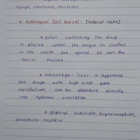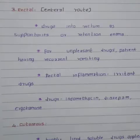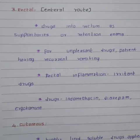The rectal route is also an enteral route. Drugs are given into the rectum as suppositories or a retention enema. It is usually used for unpleasant drugs and for patients with recurrent vomiting. Irritant drugs may cause rectal inflammation. Drugs given through this route include indomethacin, diazepam, and ergotamine.